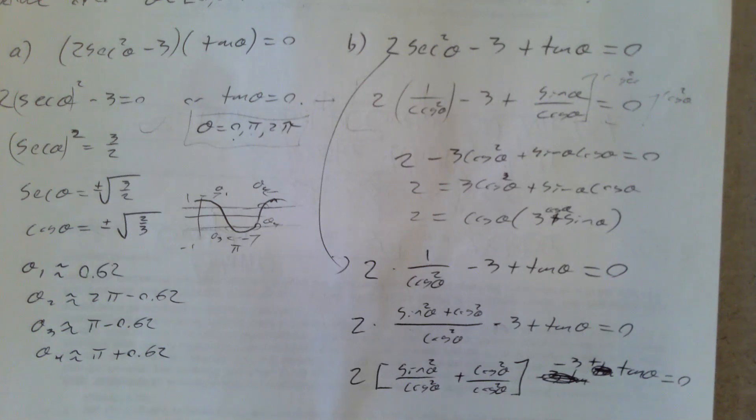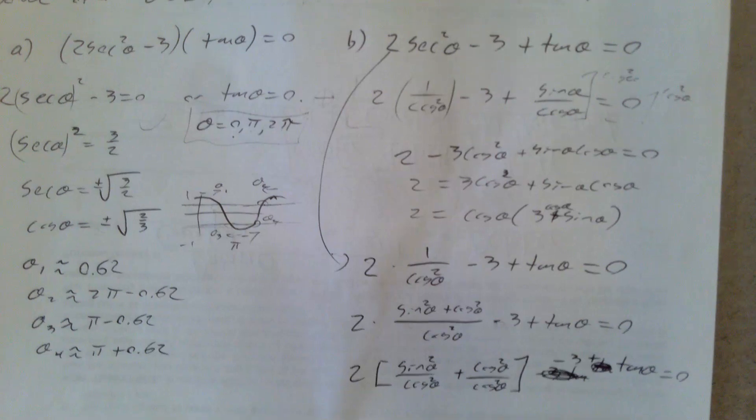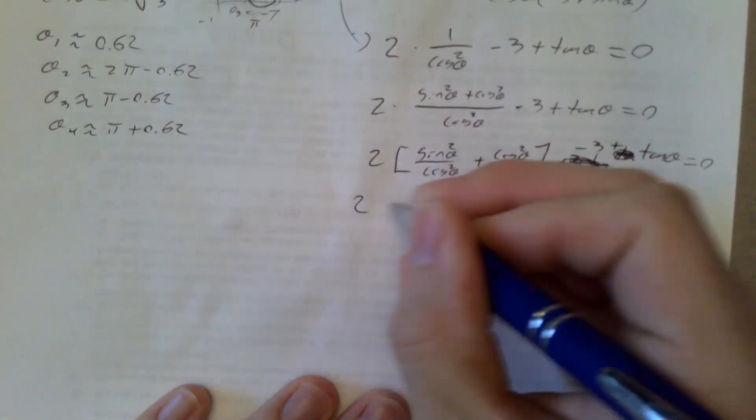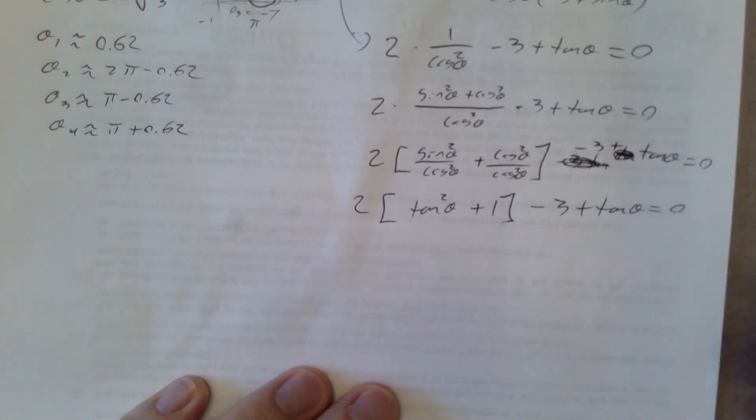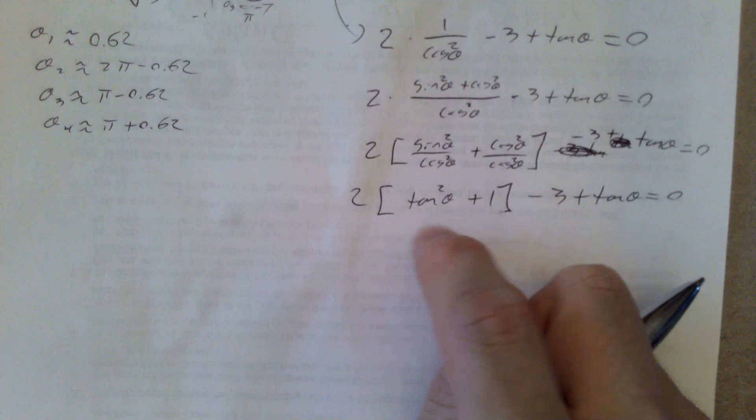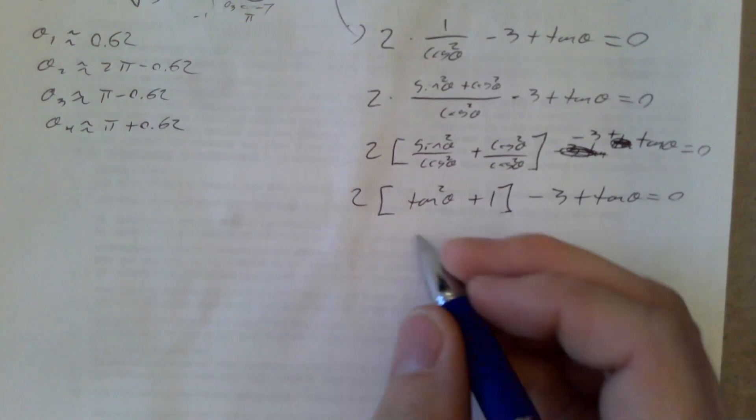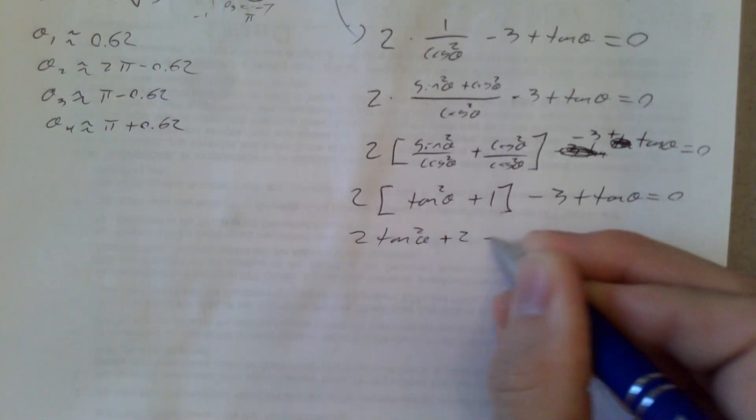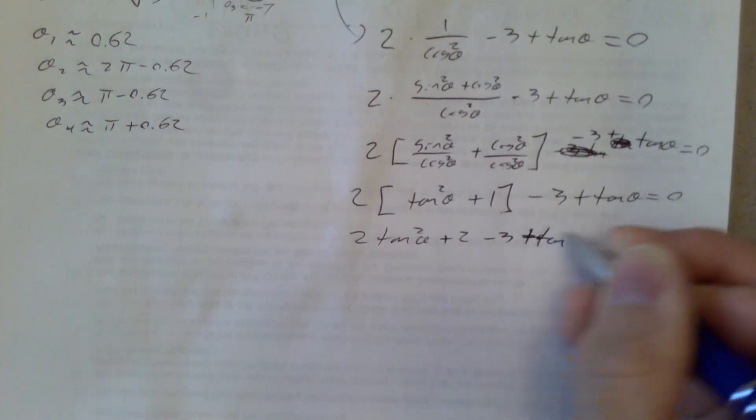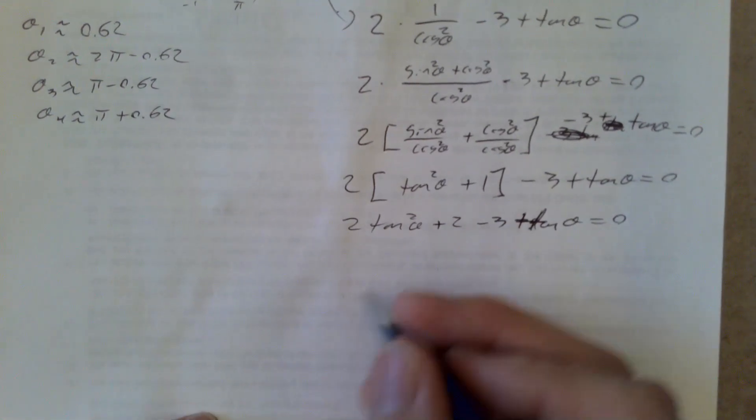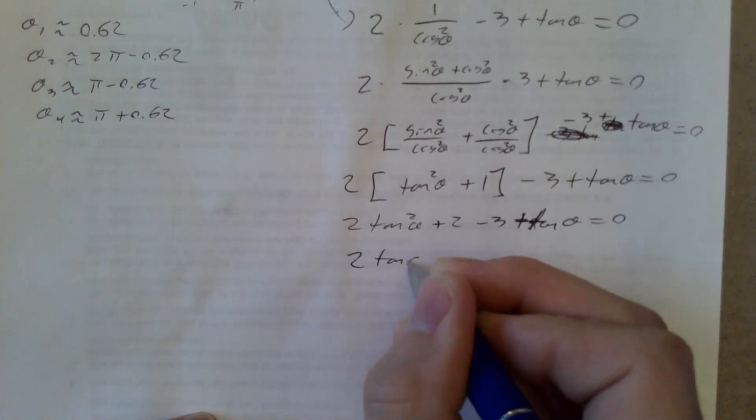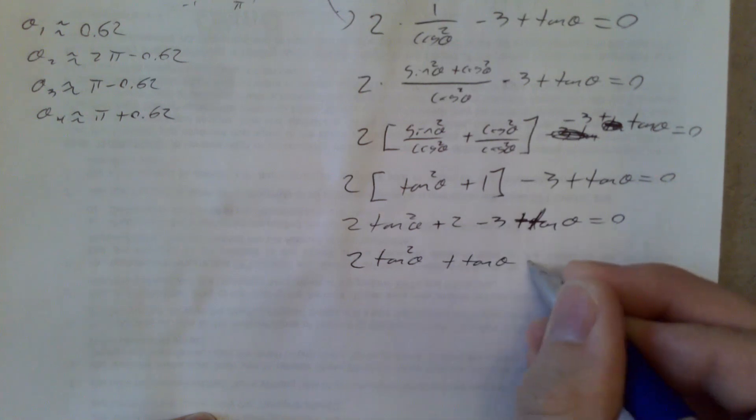A student might be rewarded if they remembered that the secant of theta squared is 1 plus the tangent of theta squared. Here we get 2 times the tangent of theta squared plus 1 minus 3 plus the tangent of theta equals 0. We have 2 times the tangent of theta squared plus 2 minus 3 plus the tangent of theta. And I can tell that I'm on track to get this in a quadratic form. So let's try 2 times the tangent of theta squared plus the tangent of theta minus 1 is equal to 0.